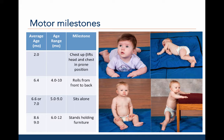The bottom right figure shows an infant standing while holding furniture. The average age of acquisition is 8.6 months, with an age range of 6 to 12 months, based on Bailey's sequence. In comparison, the age of acquisition based on Shirley's sequence is 9 months.